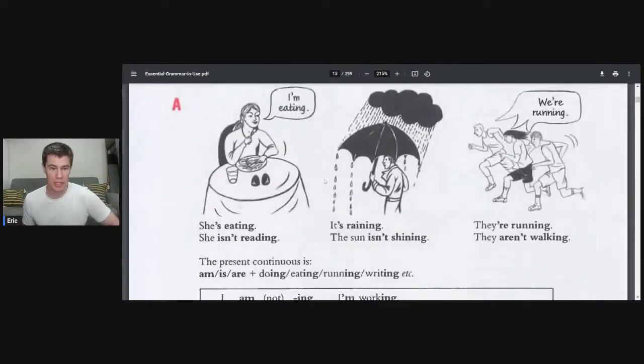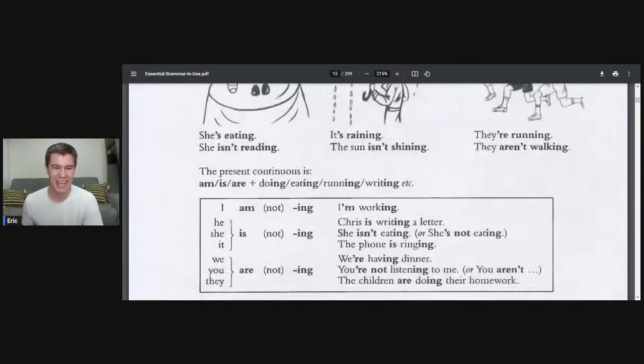So the present progressive tense is something that you do at the moment. You can say at the moment I'm watching a movie, or right now I am eating a hot dog. Here we've got some examples. It says she's eating, she isn't reading.